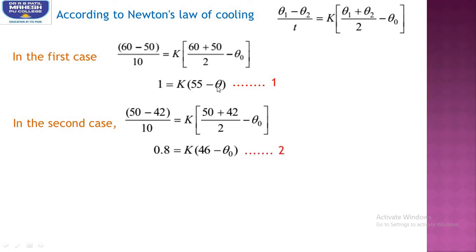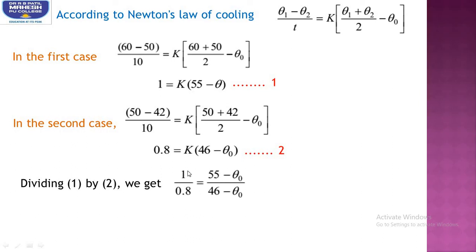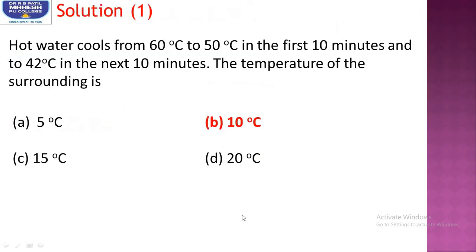Dividing equation 1 by equation 2: 1/0.8 = (55 − θ₀)/(46 − θ₀), which gives 10/8. After cross-multiplication: 46 − θ₀ = 44 − 0.8θ₀, and the value of θ₀ is equal to 10°C. The correct option is B, that is 10°C.